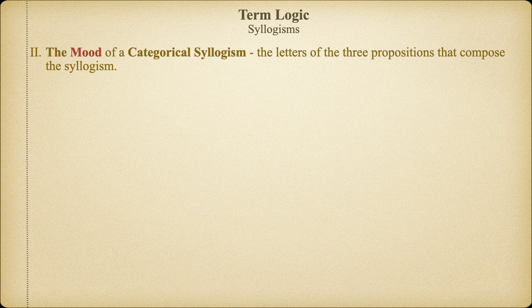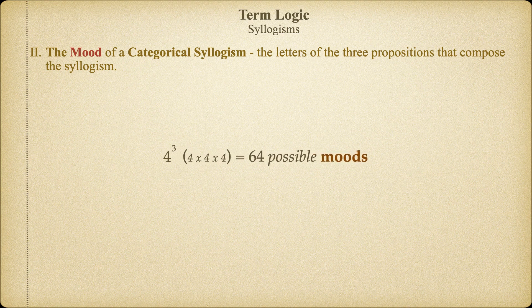Given that each categorical syllogism is composed of exactly three categorical propositions, and because there are four different kinds of categorical propositions, there are going to be 64 different possible moods of categorical syllogisms — that will exhaust all the possible orientations of our four categorical propositions into syllogistic form. Now that we understand the concept of mood, which just tells us the letter or the name of the type of propositions a syllogism is made out of, let's turn our attention to the orientation of the middle term in categorical syllogisms.